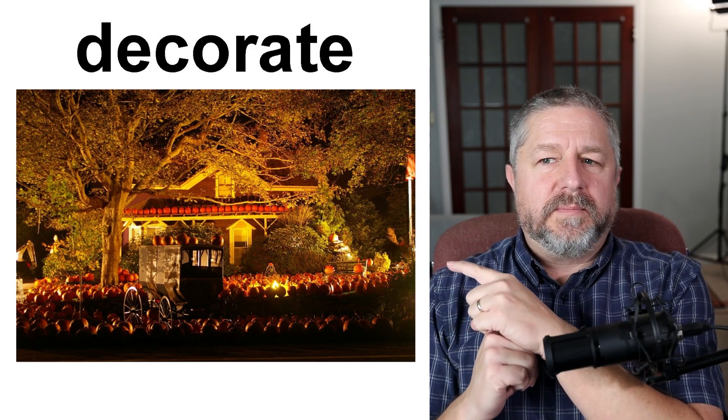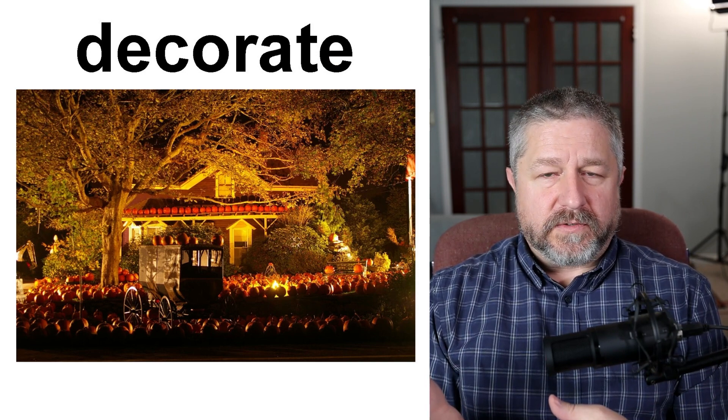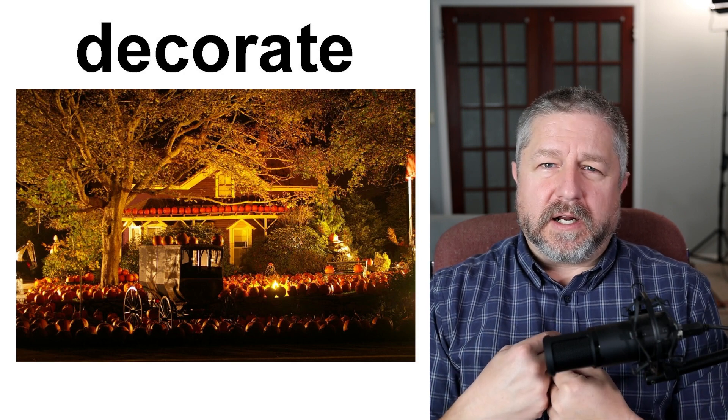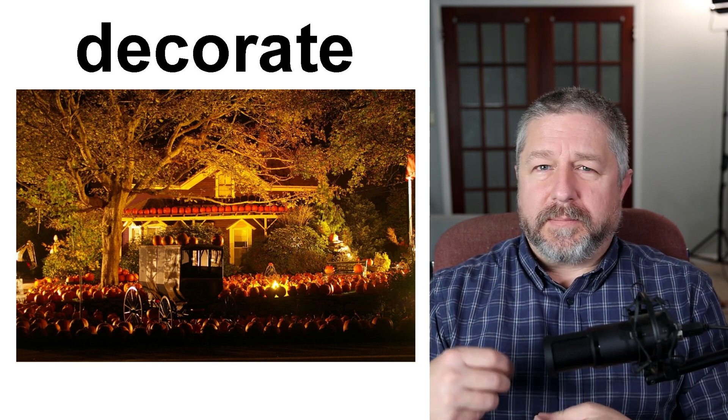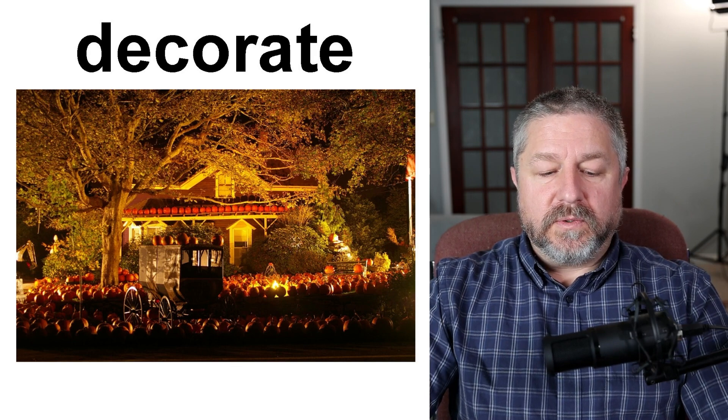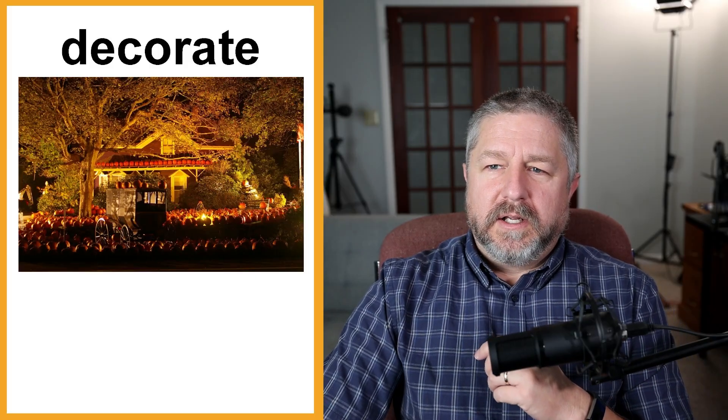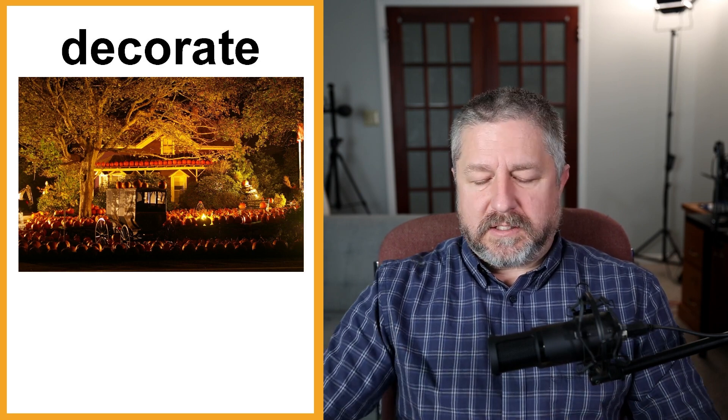Some people will decorate the outside of their house for Halloween. We don't decorate our house — sometimes we'll have a couple of jack-o'-lanterns out. Some people put up lights and scary things to make their house look a little bit spooky. The English word 'spooky' means a little bit scary or frightening. People might have a little speaker outside playing spooky sounds, or different things on the front of their house like cobwebs, a candle, a spider, and a jack-o'-lantern.